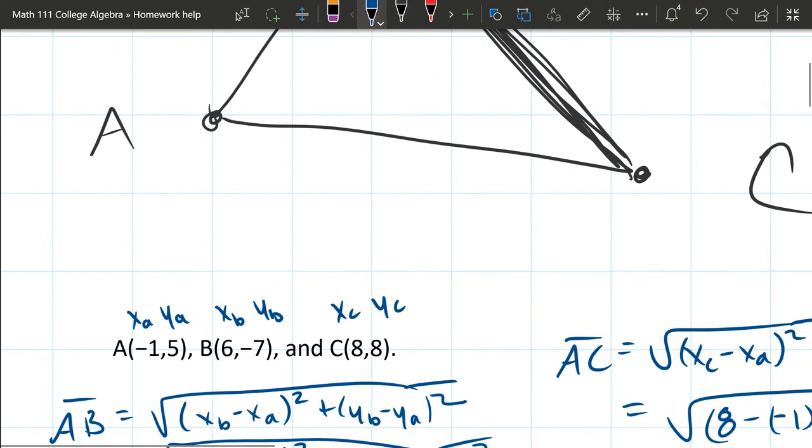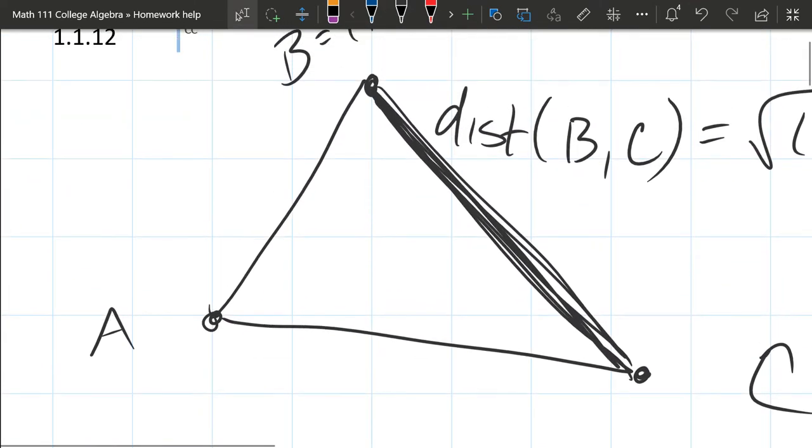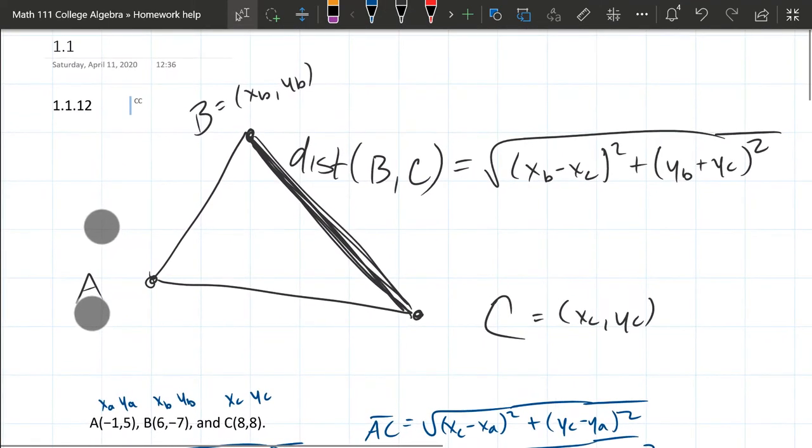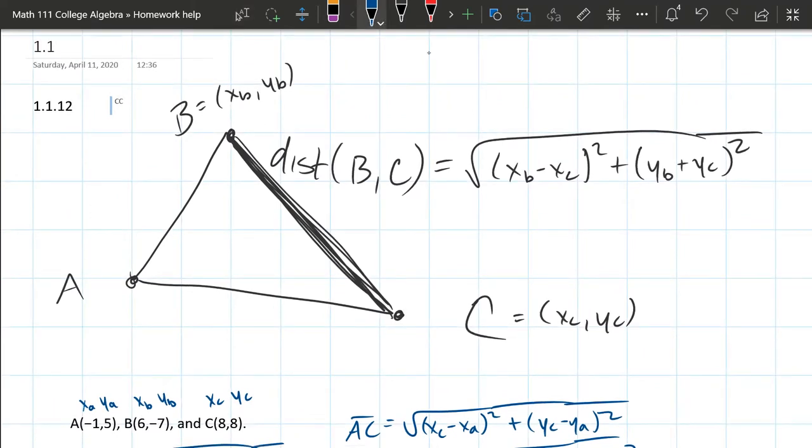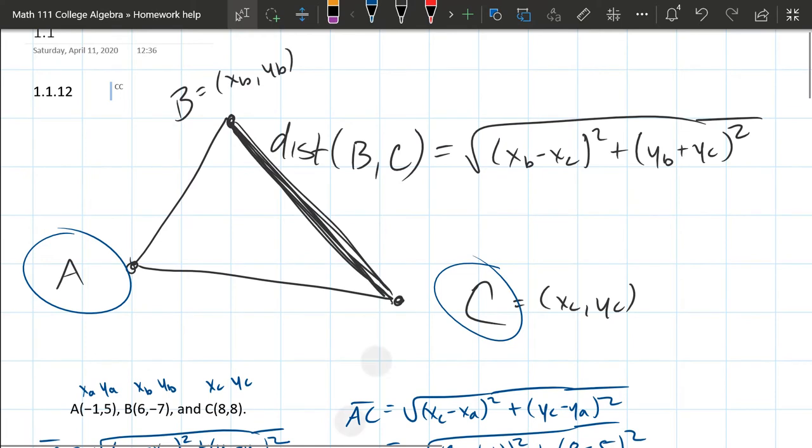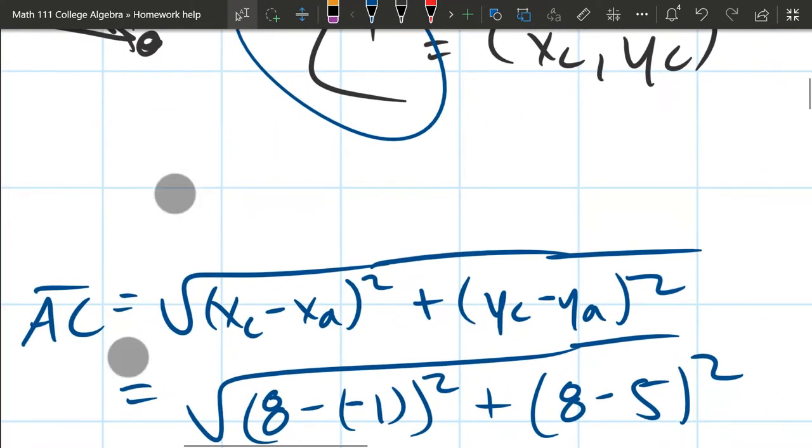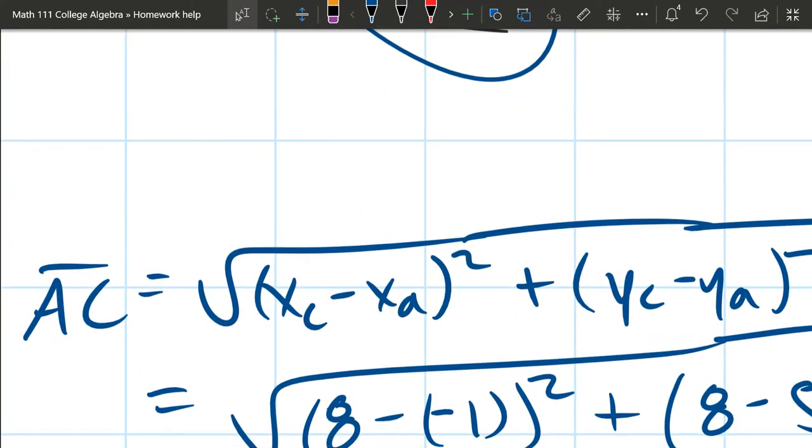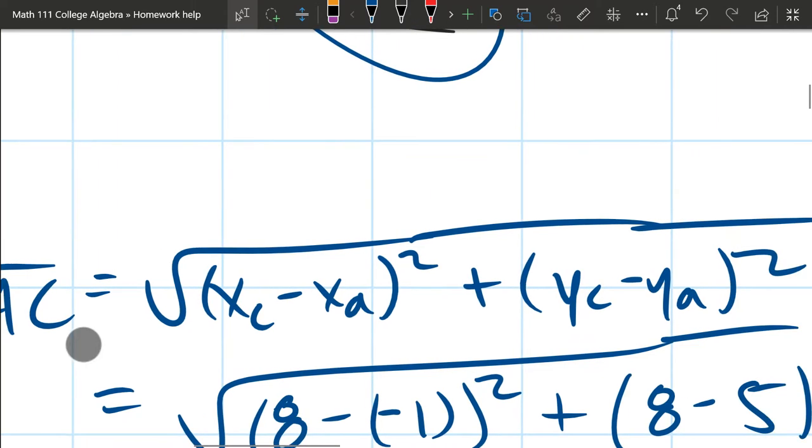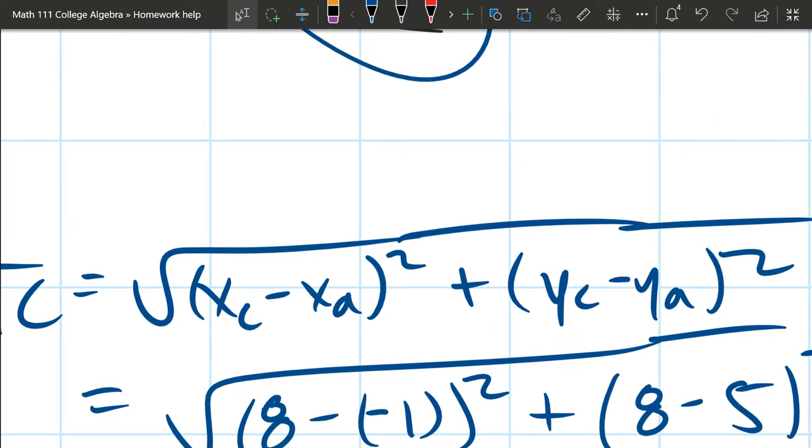And then I computed three separate distances. So the first one up, we'll look at the A, C distance. So I want to know distance between A and C. And I have that formula right here. You just take the x's, subtract them, take the y's, subtract them. You've got to square each of those and then take the square root at the end.